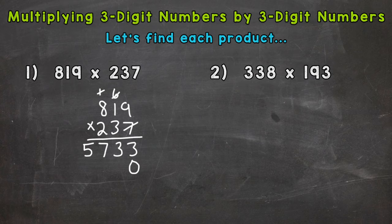Now we do 3 times 9 which is 27, carry our 2. 3 times 1 is 3 plus 2 is 5, and then 3 times 8 is 24. We get 24570.